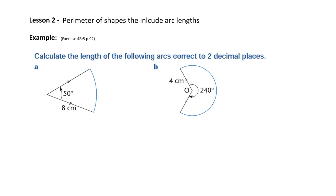In this lesson, we're going to have a look at the perimeter of shapes that include parts of a circle. So in this particular case, we're looking at the arc length of a circle — that's part of the circumference of a circle — and we're going to use this to help us find perimeters.